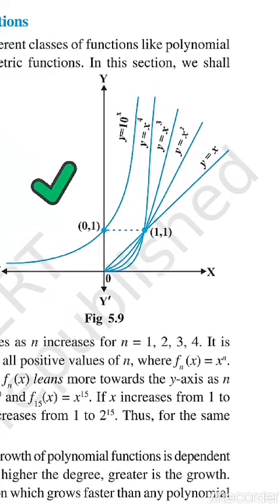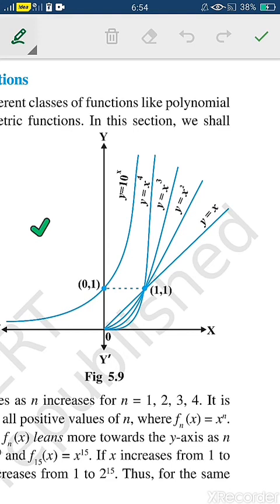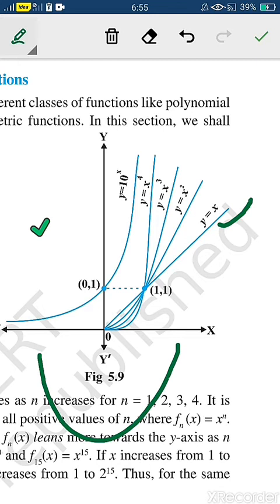Suppose y = x — if y = x you can draw this straight line. Now suppose y = x². It is a polynomial equation of degree 2, also called a quadratic equation. Its graph will be a parabola, drawn like this.